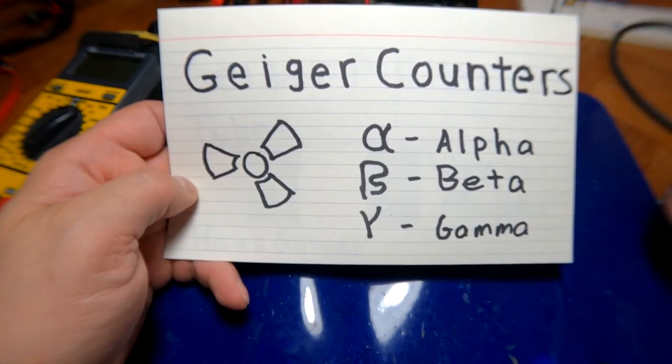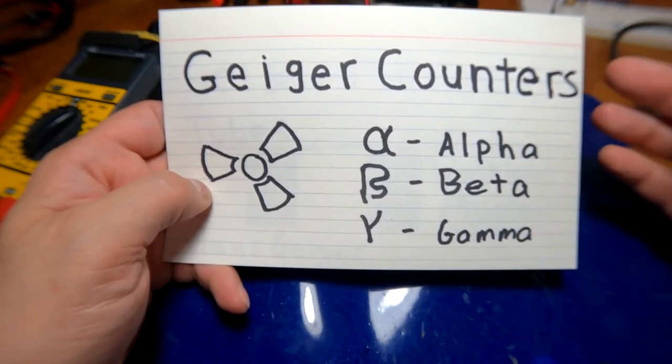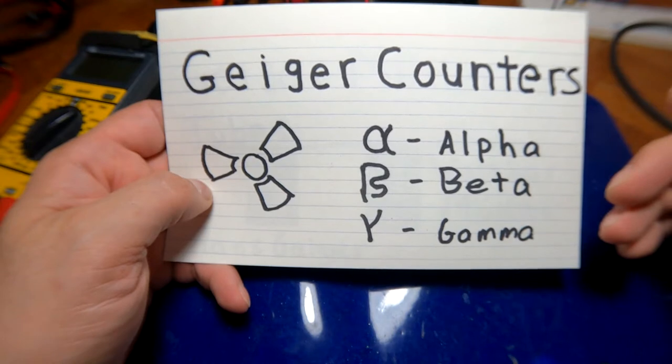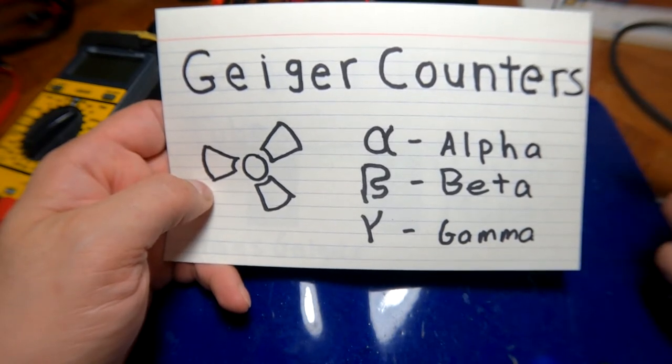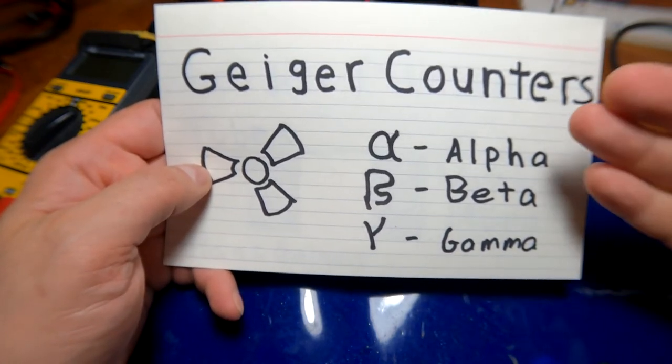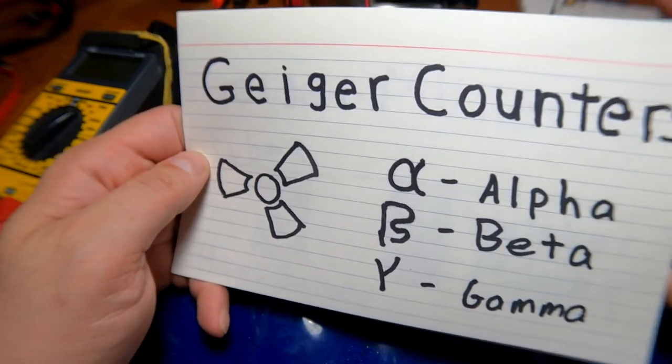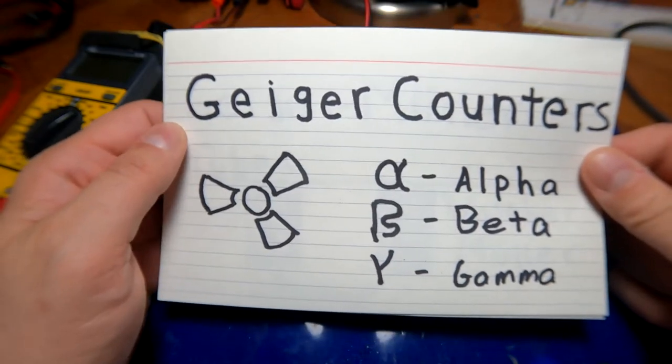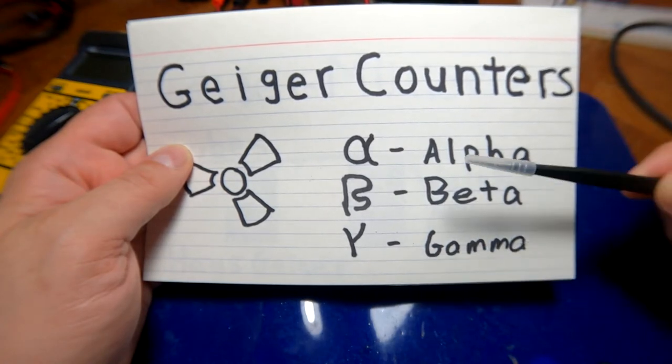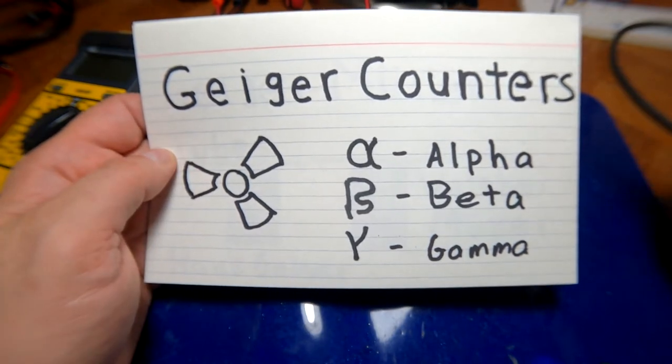And so it's really actually fairly difficult to detect alpha radiation unless you have specific setups. You need to have openings into the sensors that are difficult to maintain because they have very delicate shields made out of things like mica and so forth. So alpha detecting Geiger counters are not as common. You can buy them, but they tend to be more expensive. Beta and gamma radiation are much easier to detect with a hobbyist level type Geiger counter and Geiger tube. And that's what I'll be showing you today.